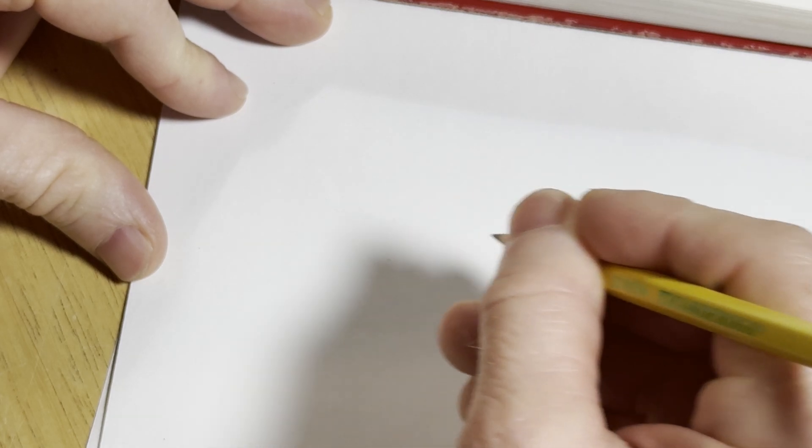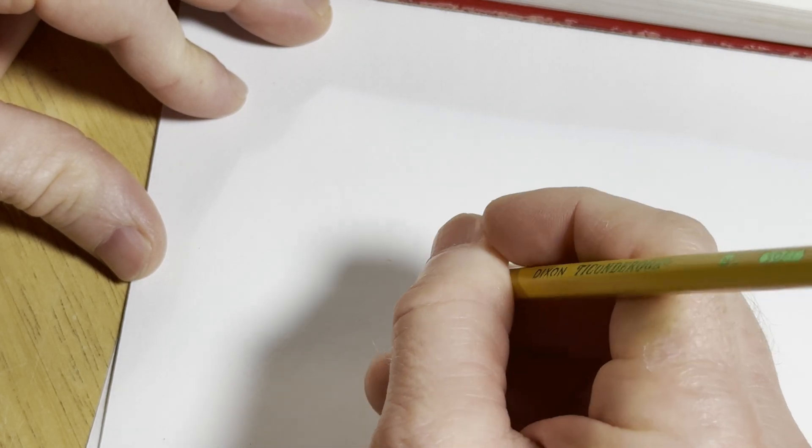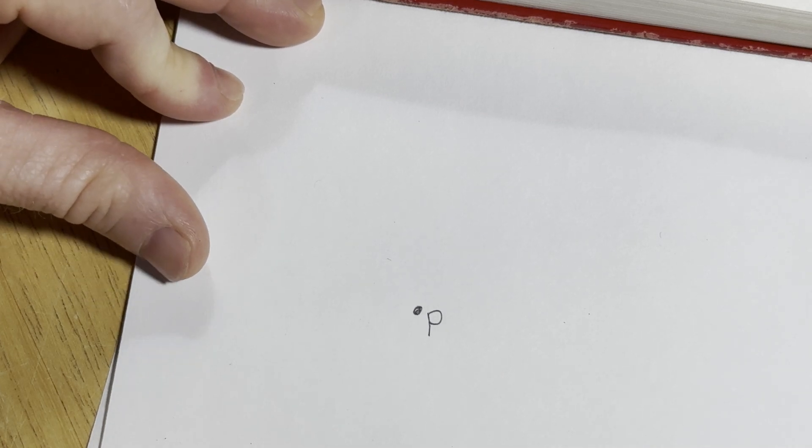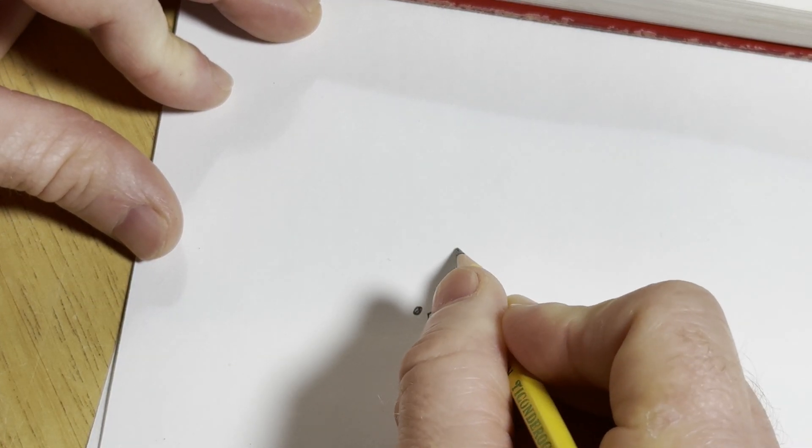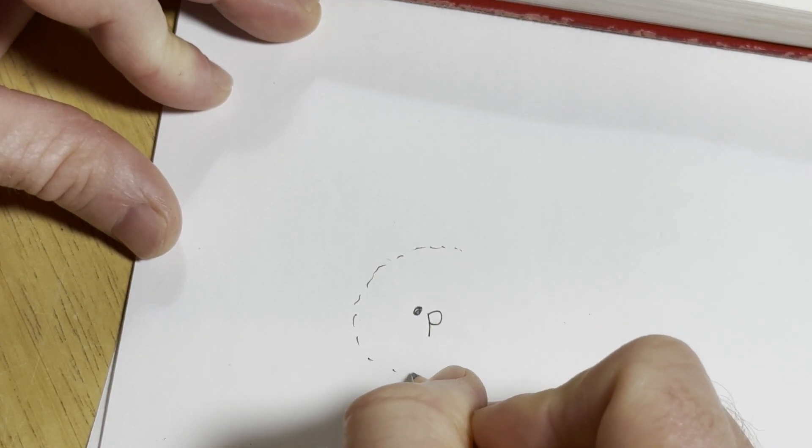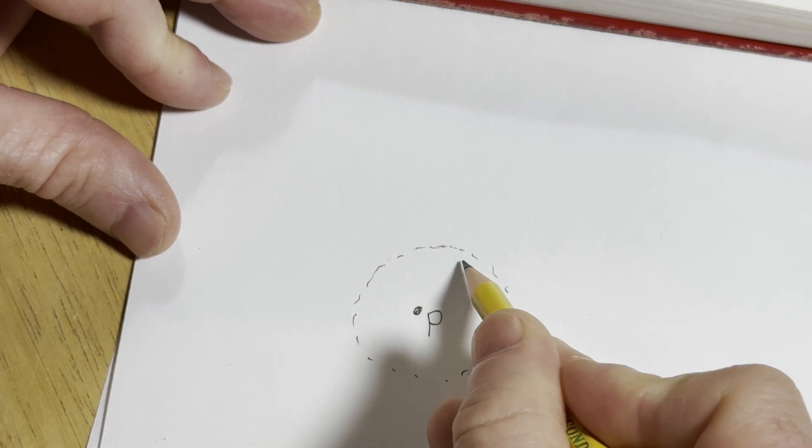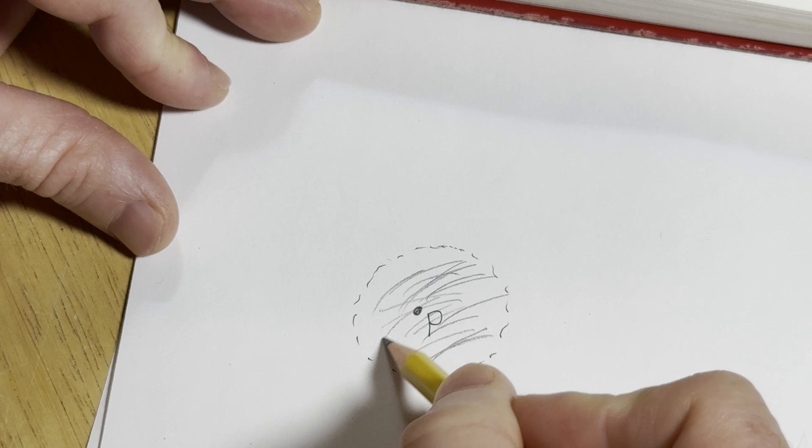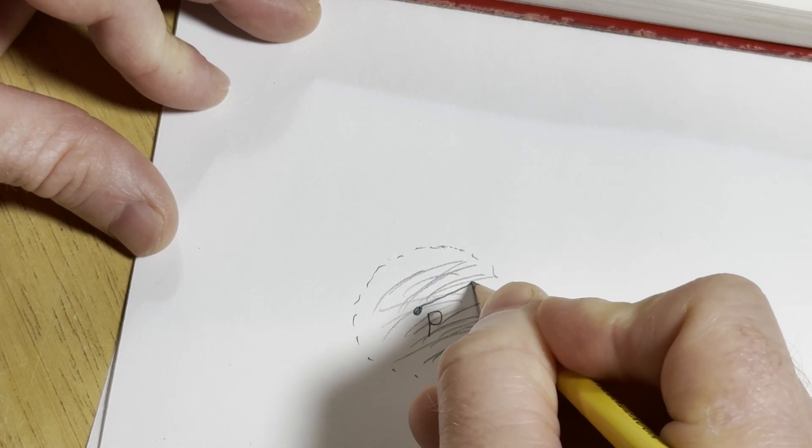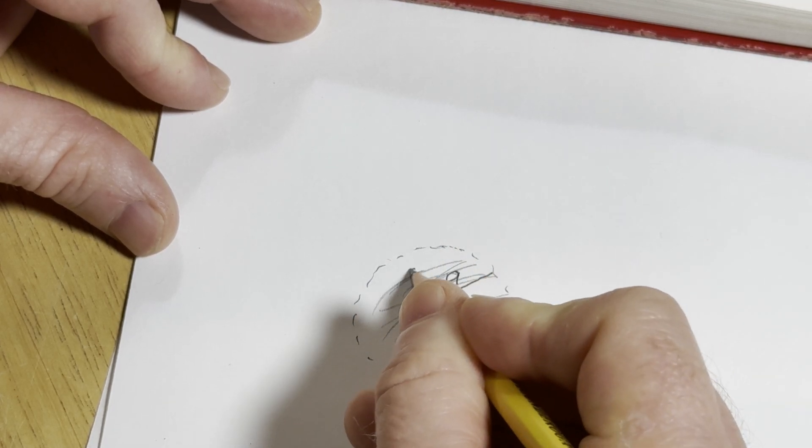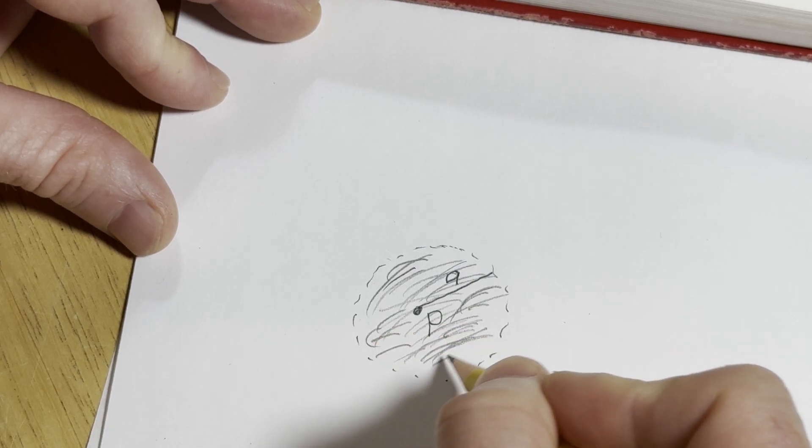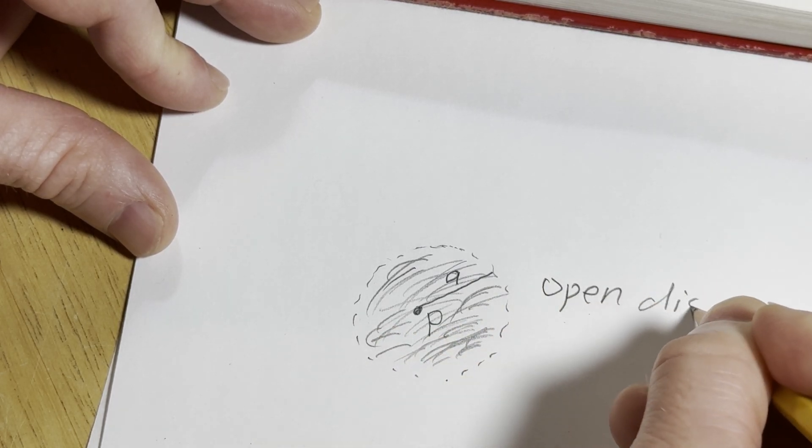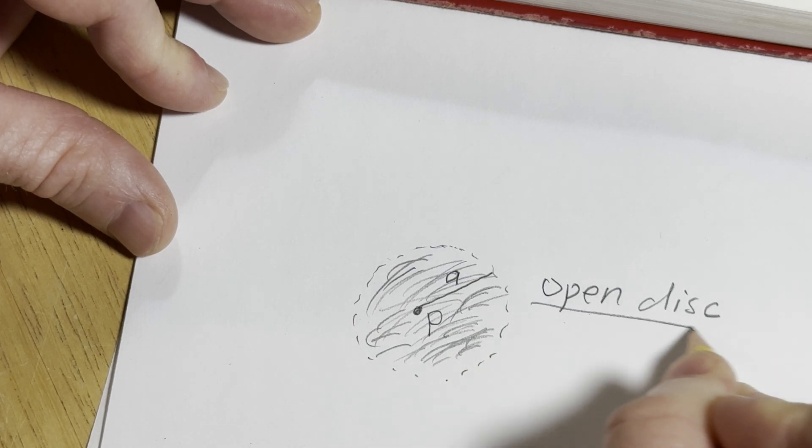If p is our point in the plane, if we have little dots like this, it means I'm not including this point. And then we just look at what's in here. This here would be the open disc.